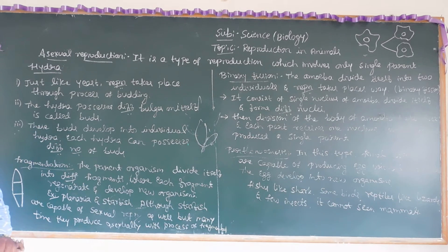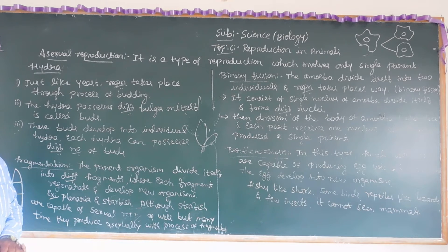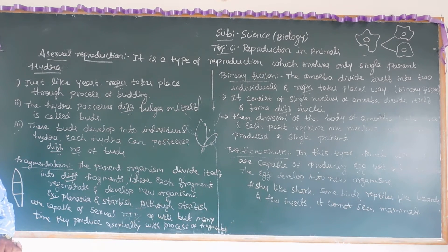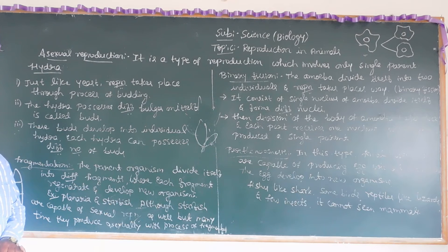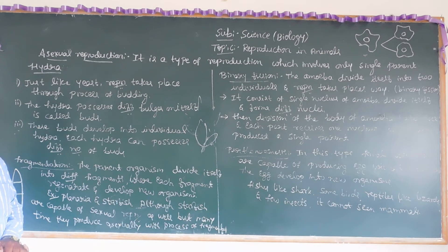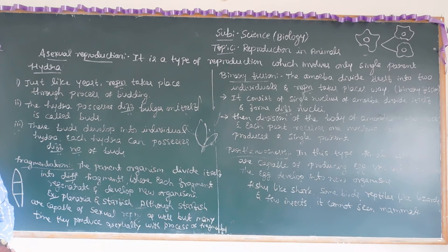Each fragment can regenerate and develop into a new organism. If you cut the anterior or posterior part, it can develop into a new organism. Examples of fragmentation include planaria and starfish. While these organisms can also reproduce sexually, they often use asexual fragmentation when conditions are unfavorable.